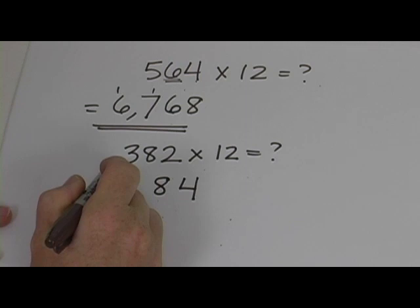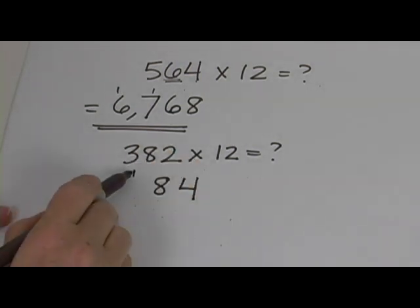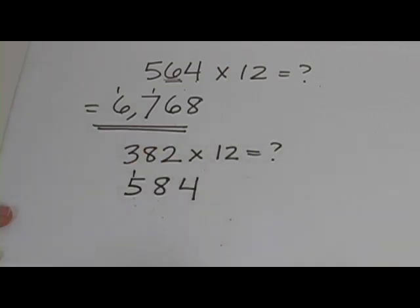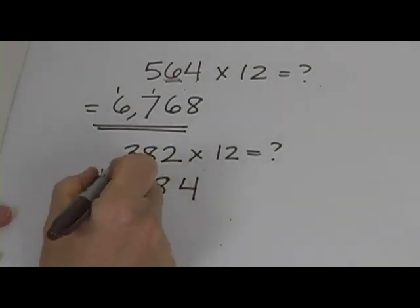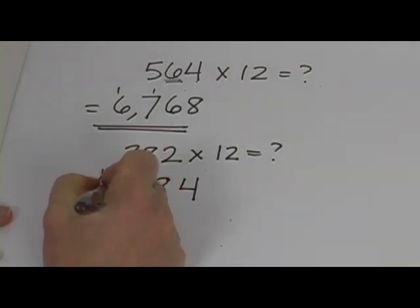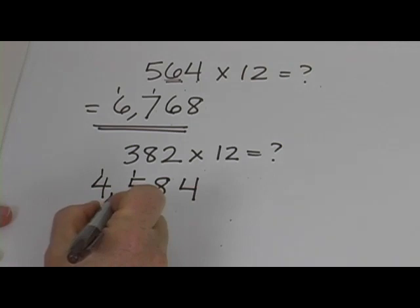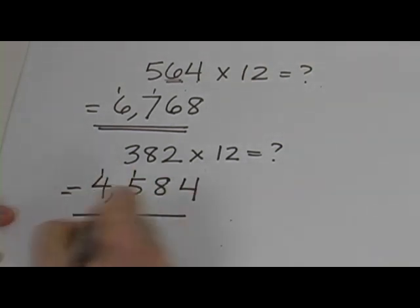Take the 3 and double it. So that's 6. 6 plus 8 is 14 plus that extra 1 we carried. So that's 15. I'm going to carry it. Take the 3 and bring it down. So the 3 plus a 1 is a 4. So the answer to 12 times 382 is 4584.